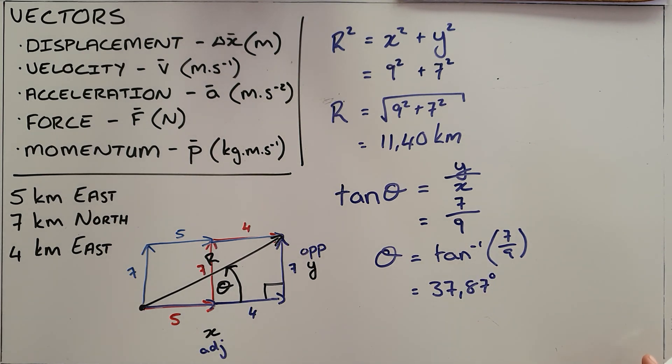What this now tells us is that these three vectors can be combined to find a resultant vector, which would mean that it would have exactly the same magnitude and direction as those three vectors combined if this person were to travel 11.4 kilometers at an angle of 37.87 degrees.